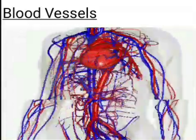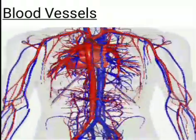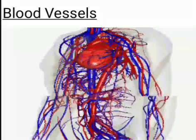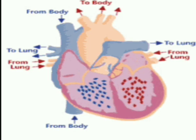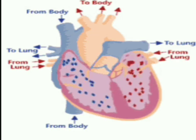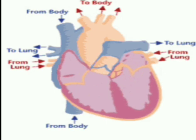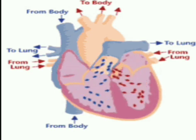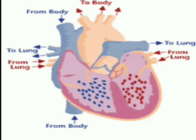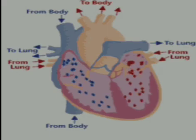Human blood is divided into 4 blood groups: A, B, AB, and O. The rate of heartbeat varies from person to person; on average, the heart beats 72 times per minute. This heartbeat rate increases during exercise, exertion, or when a person is excited. The heart of a newborn baby beats at 140 times per minute, whereas the heart of a 3-year-old child beats at 100 times per minute. Thank you.